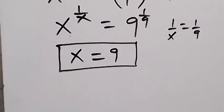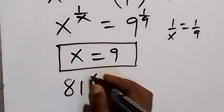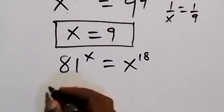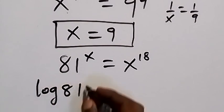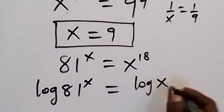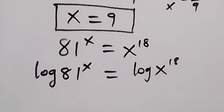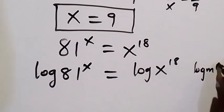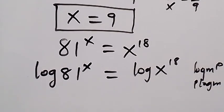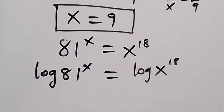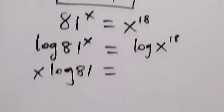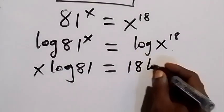We can also solve the same problem in another way. We are given 81 raised to power x equals to x raised to power 18. From there, we can take the log on both sides: log 81 raised to power x equals to log x raised to power 18. From the power law of logarithms — when we have log m raised to power p, this power p can be taken to the front, giving p log m. Applying this, x comes to the front giving x log 81, which equals 18 log x.